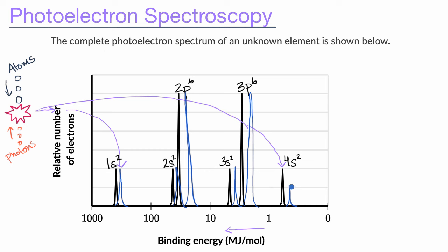The outermost shell shows where the valence electrons are, so for potassium, that's the outermost spike. The binding energy of that outermost spike tells us how much energy is needed to remove an electron — and that's your first ionization energy. Once you remove that first electron, all the interactions between electrons change, so you can't read second or third ionization energies directly from the spectrum. But your first ionization energy is simply the binding energy of your outermost electrons.